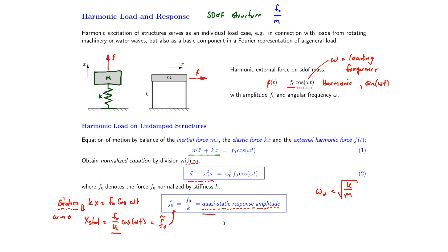The static deflection is conveniently introduced as the normalized load magnitude. We take f₀ and divide by k, and multiply by k/m, so f/m can be written as the static deflection f₀-tilde times the natural frequency squared, as shown on the right-hand side of equation 2. This f₀-tilde will appear regularly during today's lecture and we refer to it as the static deflection.